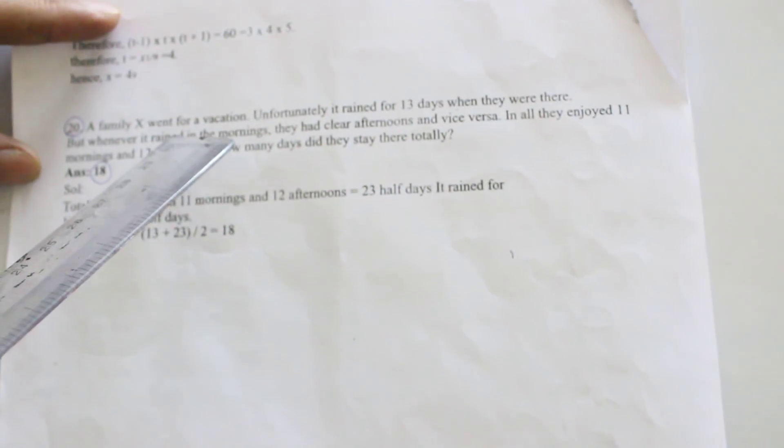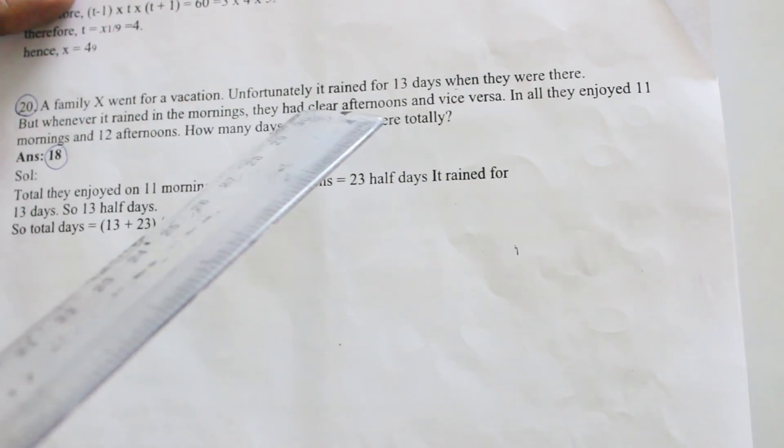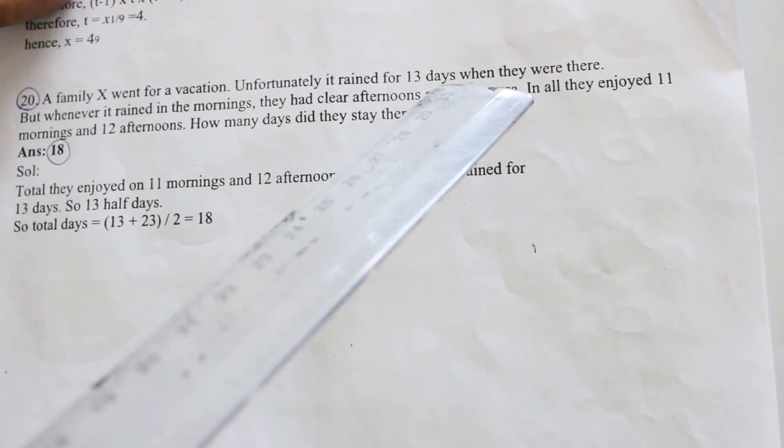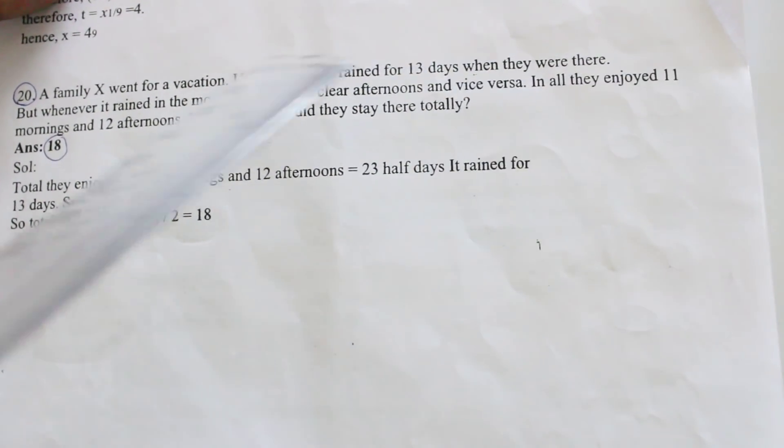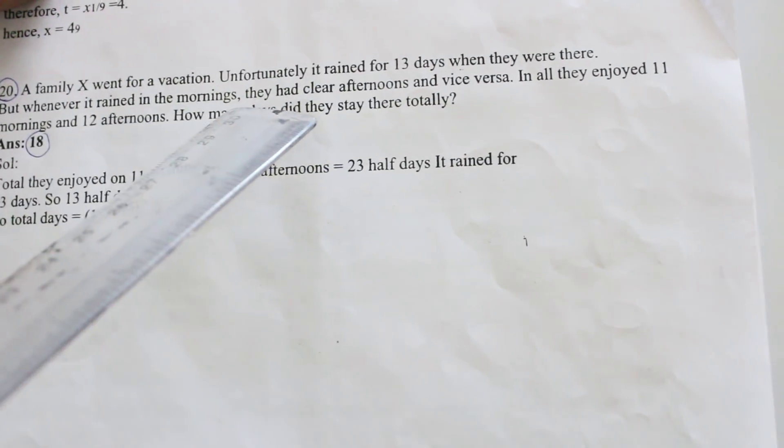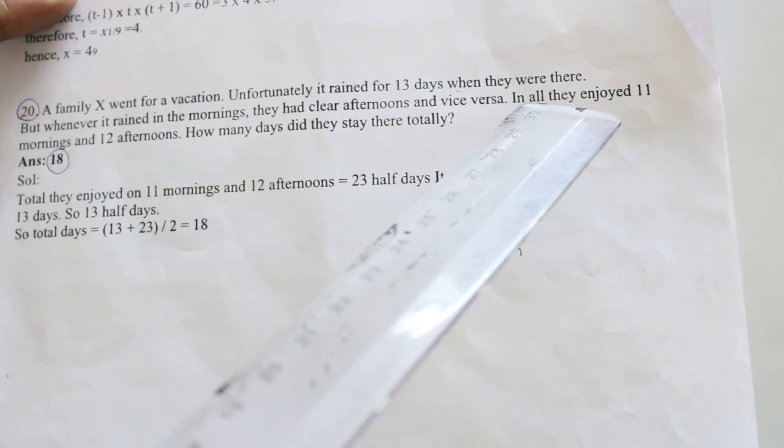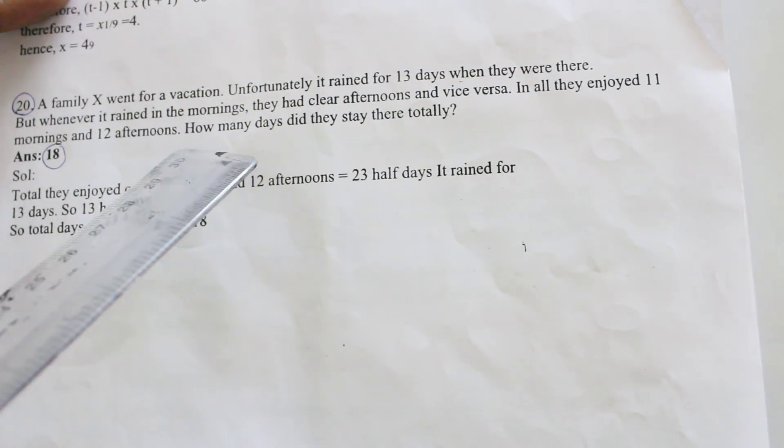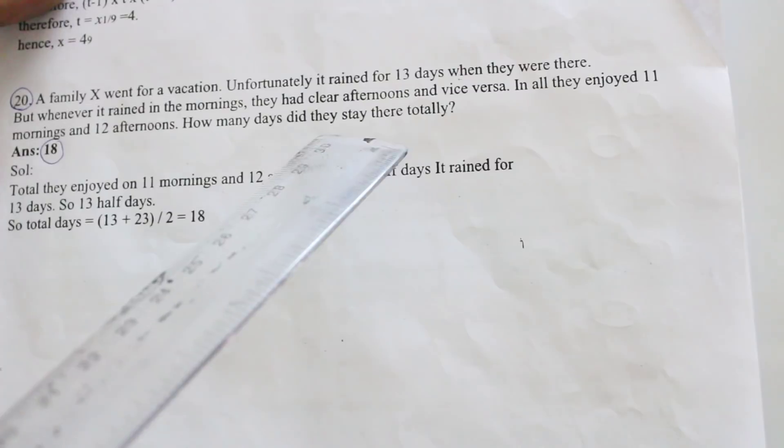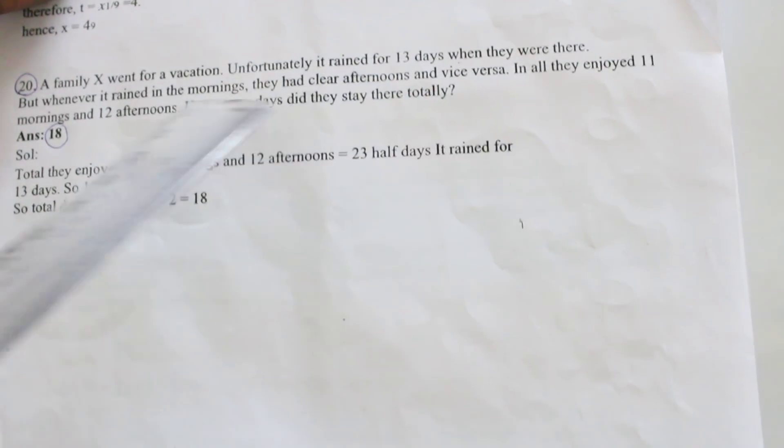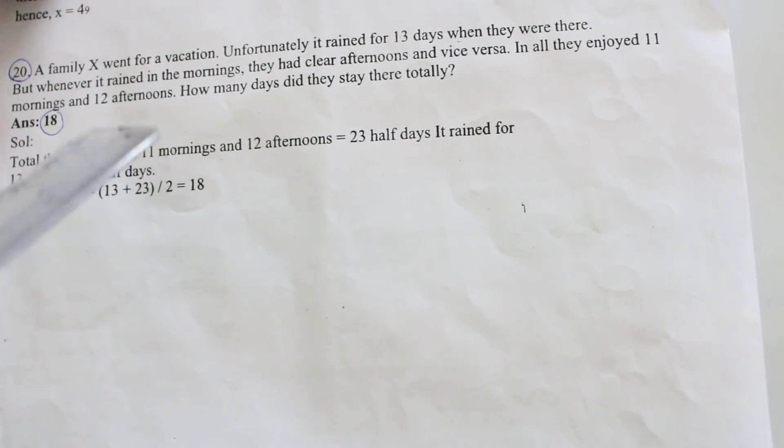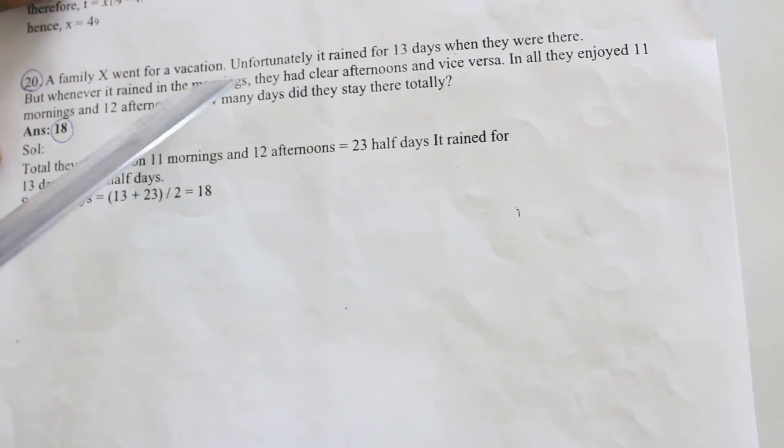Come to the next question, the final question, last question: A family went for a vacation. Unfortunately, it rained for 13 days when they were there. But whenever it rained in the mornings, they had clear afternoons and vice versa. In all they enjoyed 11 mornings and 12 afternoons. How many days did they stay there totally? The answer is 18. But this question is already previously explained.